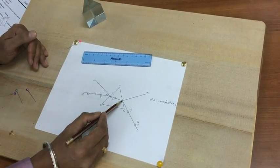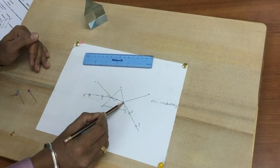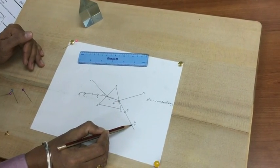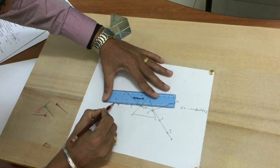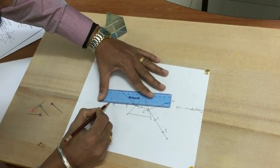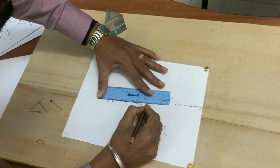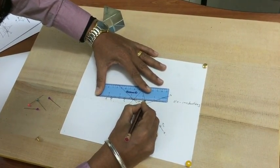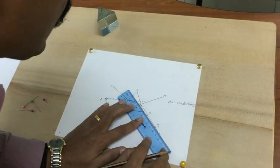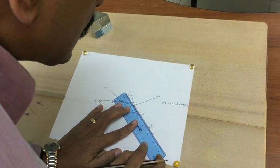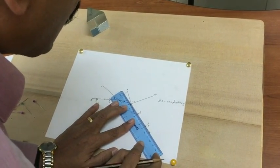And as it enters from a denser medium into a rarer medium, it bends away from the normal. Extend EO and also extend RQ.